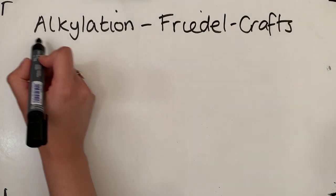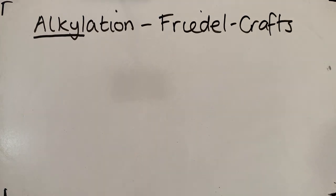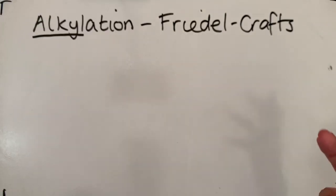And given that we're doing the alkylation, we are going to be adding an alkyl group. So that just means we're adding an alkane chain to it.